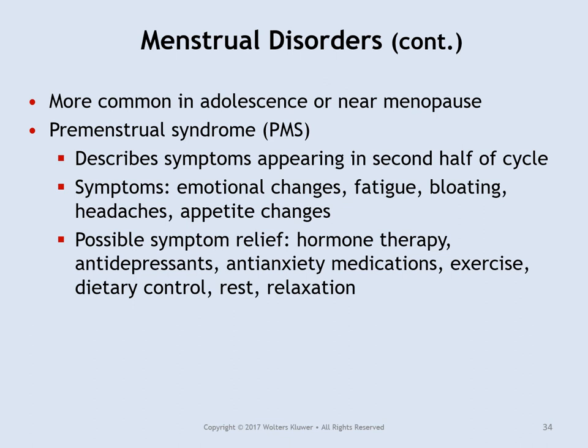PMS is most common in adolescence and more common approaching menopause. Symptoms occur in the second half of the cycle — usually right before menstruation — and include emotional changes, mood swings, fatigue, bloating, changes in appetite, and headaches. Treatment depends on severity: hormone therapy can help in severe cases, as can antidepressants and anti-anxiety medications. Doctors typically start with a low-profile approach first, focusing on relaxation techniques, over-the-counter pain medications, exercise, and dietary changes.